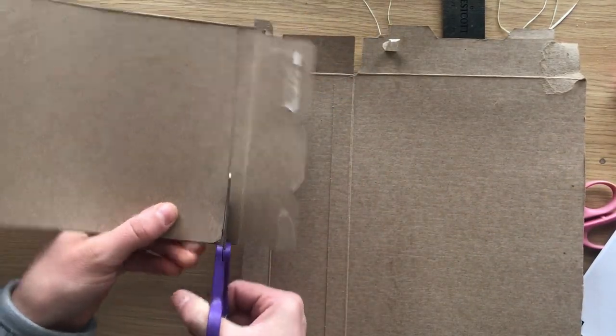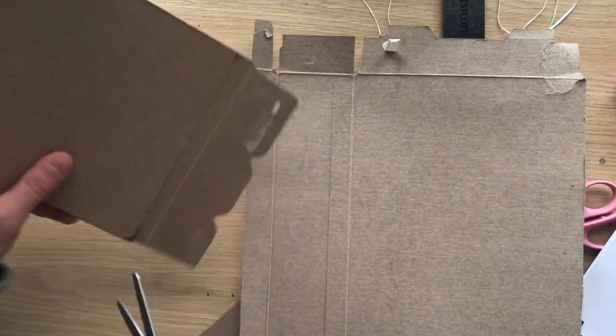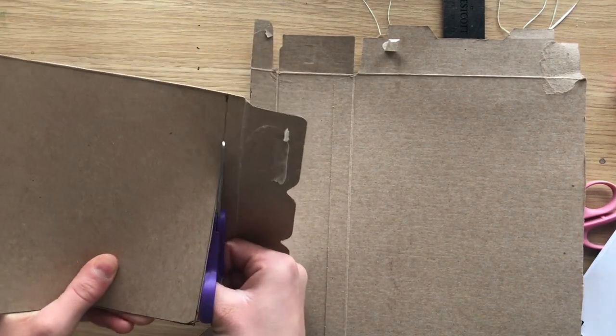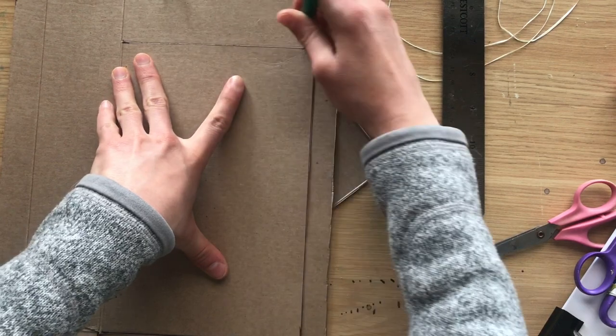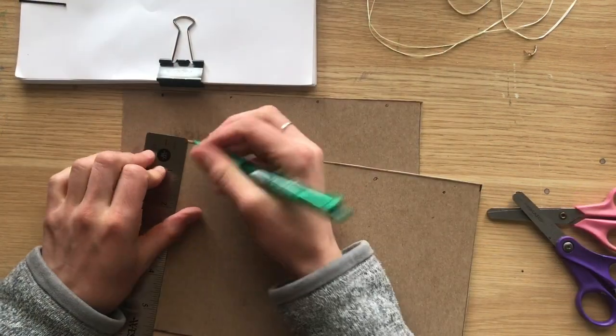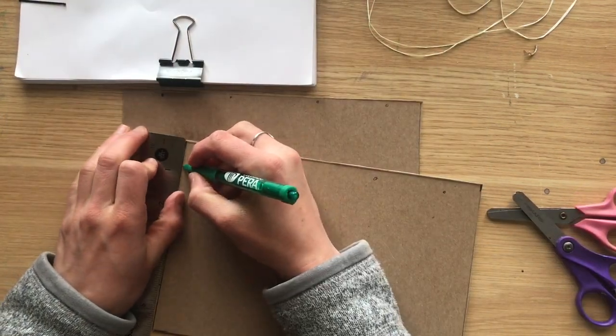So when you've measured your front and your back cover, you're going to cut them out. And then after you cut them out, if you want to cover your book cover in fabric or fun paper, this is where you would do it.